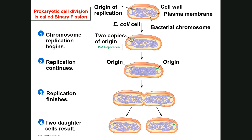We never talk about mitosis and meiosis in reference to prokaryotic cells. Mitosis and meiosis are two different forms of nuclear division — and prokaryotic cells have no nucleus, so they call their type of cell division binary fission. However, what prokaryotic cell division has in common with eukaryotic cell division is that DNA replication occurs. Prokaryotic cells have circular DNA, but it's all twisted up — it's not a perfect circle, it's all folded up on itself.